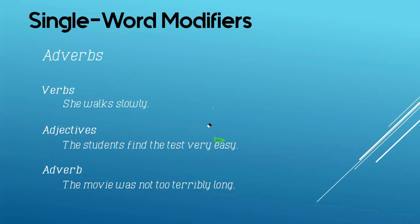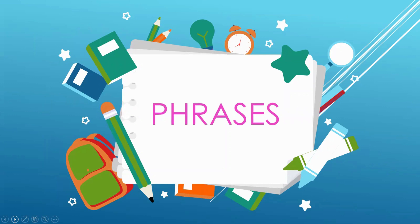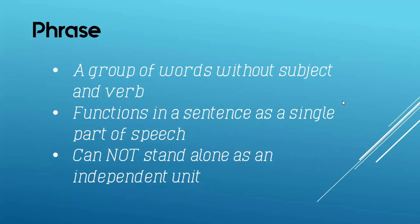So, when I say single word or one word modifiers, we are talking about adverbs and adjectives. But take note that adjectives or adverbs may also be written in different forms — in the form of a phrase. A phrase is a group of words without subject and verb, functions in a sentence as a single part of speech, and cannot stand alone as an independent unit. In short, they may be a part of a sentence, cannot stand by itself, and is a group of more than one word.